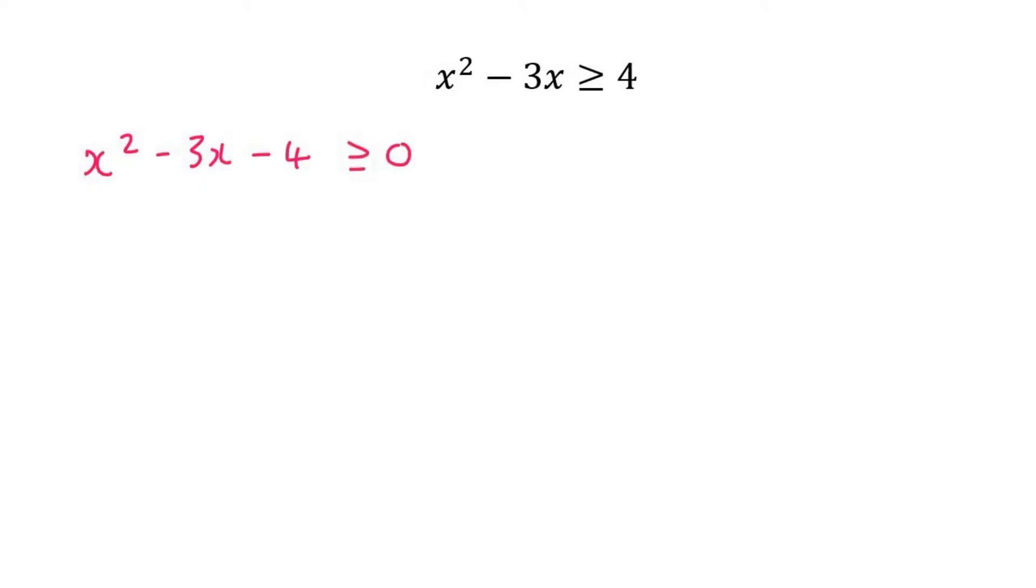Now what you do is you just pretend that this is an equal sign, and so you could factorize this. And this would factorize as x minus 4 and x plus 1.